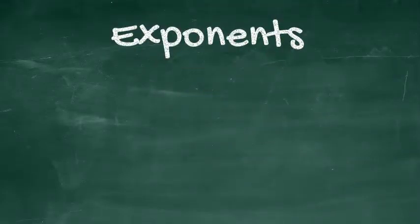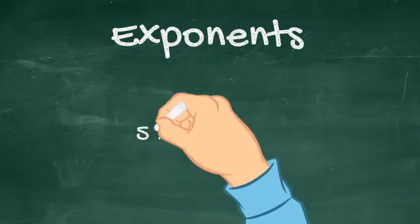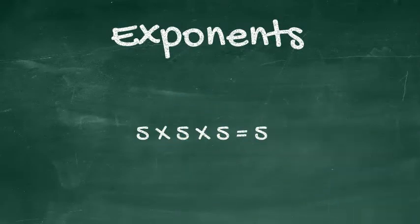Exponents are just shorthand for saying that you're multiplying a number by itself two or more times. For instance, instead of saying 5 times 5 times 5,